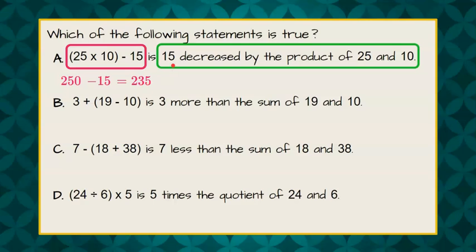Now I'm going to rewrite our verbal description as a numerical description. So 15 decreased means subtract by the product of 25 times 10. So we want to take this product, so I put it in parentheses. 15 decreased by the product. So 25 times 10 is the first thing I need to do. So I'm going to rewrite this to be 15 subtract 250.